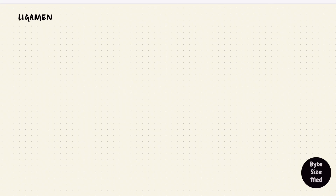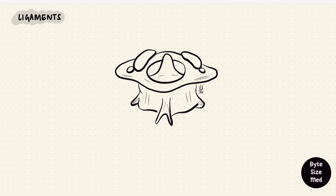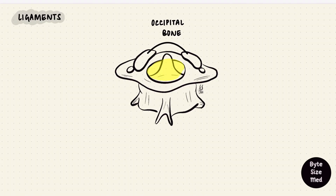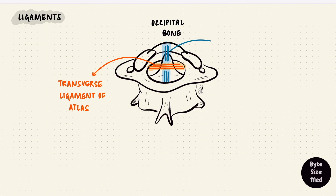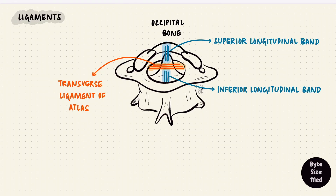Now let's look at some ligaments that keep all these joints stable. Assume this is atlas and axis, and we're looking at them from behind. Atlas articulates with the occipital bone. The first few ligaments are inside this ring. The transverse ligament of atlas goes behind the dens from one lateral mass to the other. It is strong, but it has two weaker bands extending above and below. The superior longitudinal band attaches to the occipital bone, and the inferior one to the body of axis. Putting these three together forms the cruciate ligament of atlas.